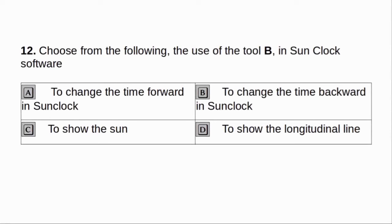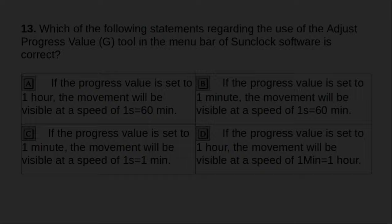Choose from the following the use of tool B in SunClock software. A. To change the time forward in SunClock. B. To change the time backward in SunClock. C. To show the sun. D. To show the longitudinal lines. Answer: B. To change the time backward in SunClock.